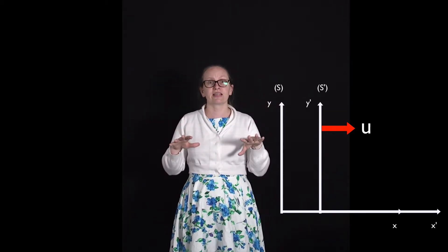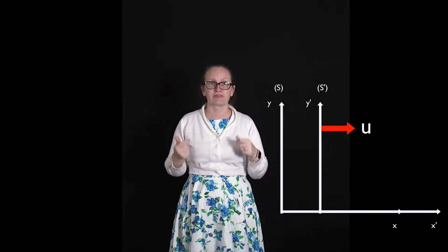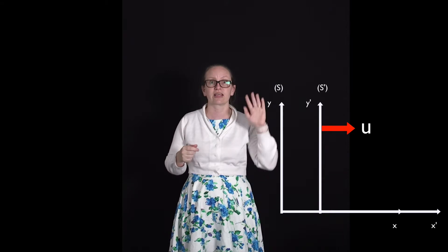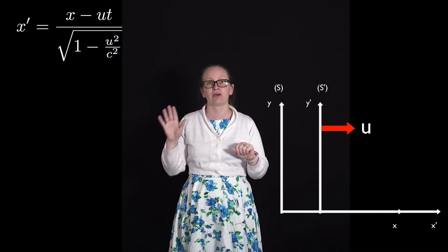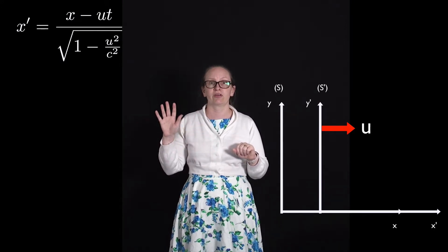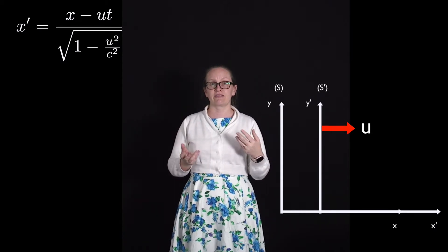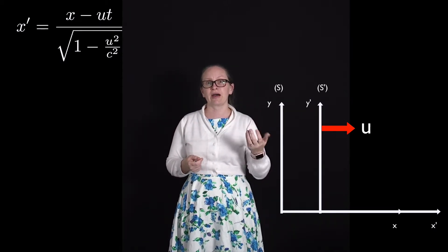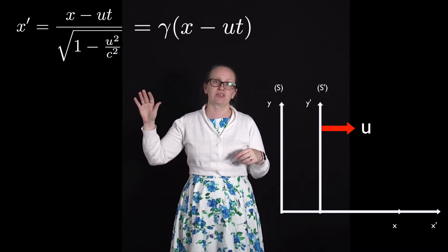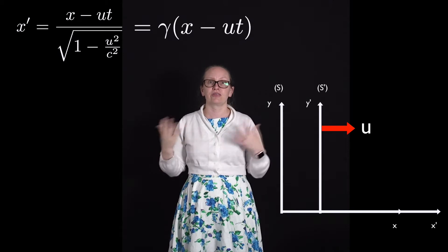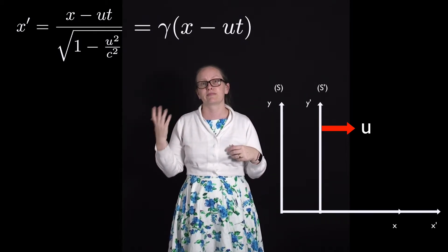To transform our quantities from one reference frame to another with the Lorentz transforms, we use the equation: X' is equal to X minus UT over the square root of 1 minus U squared over C squared. This is quite long to write, so sometimes we use gamma in place of 1 divided by the square root of 1 minus U squared over C squared. So this transform can be written as X' equals gamma times (X minus UT).